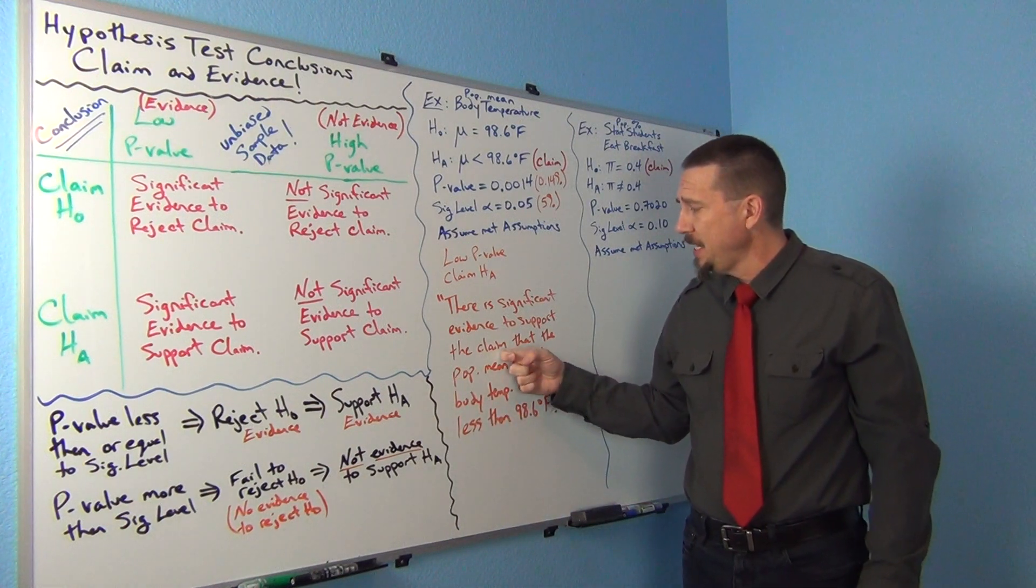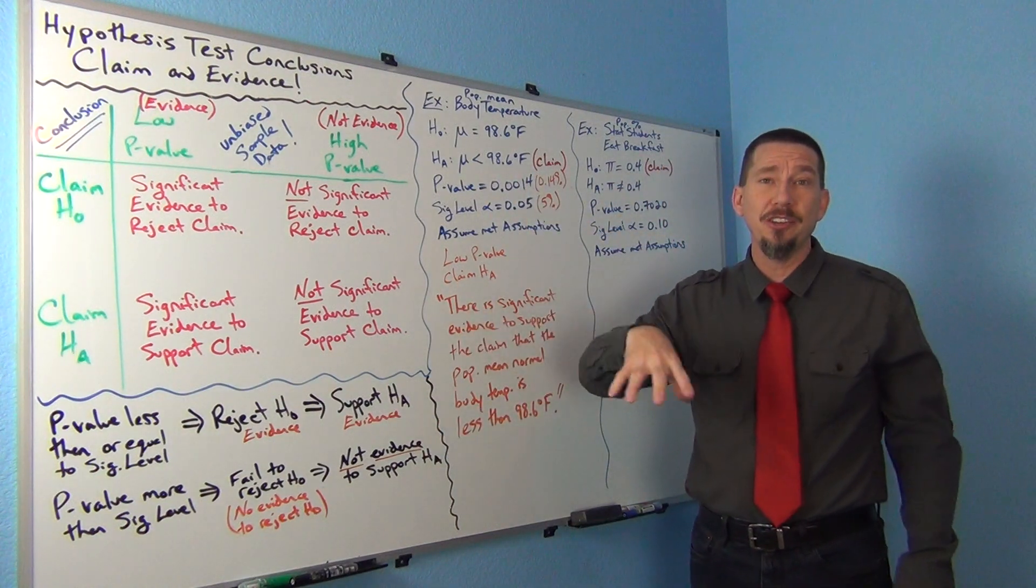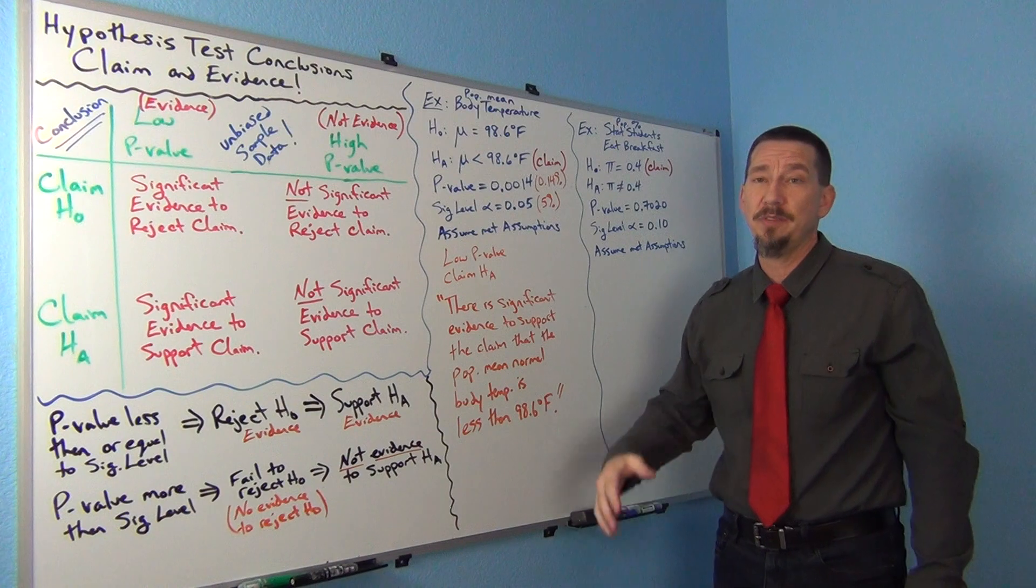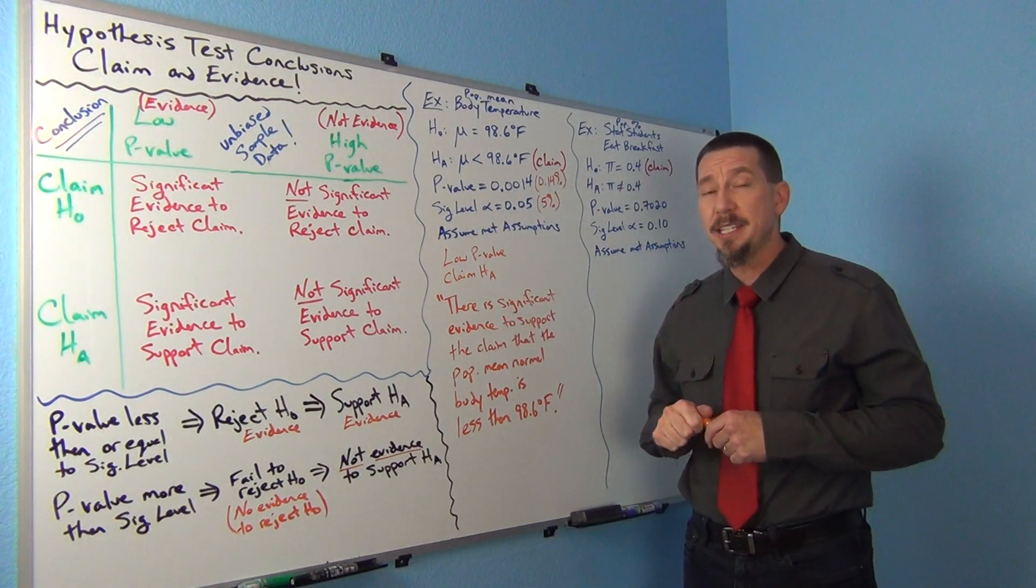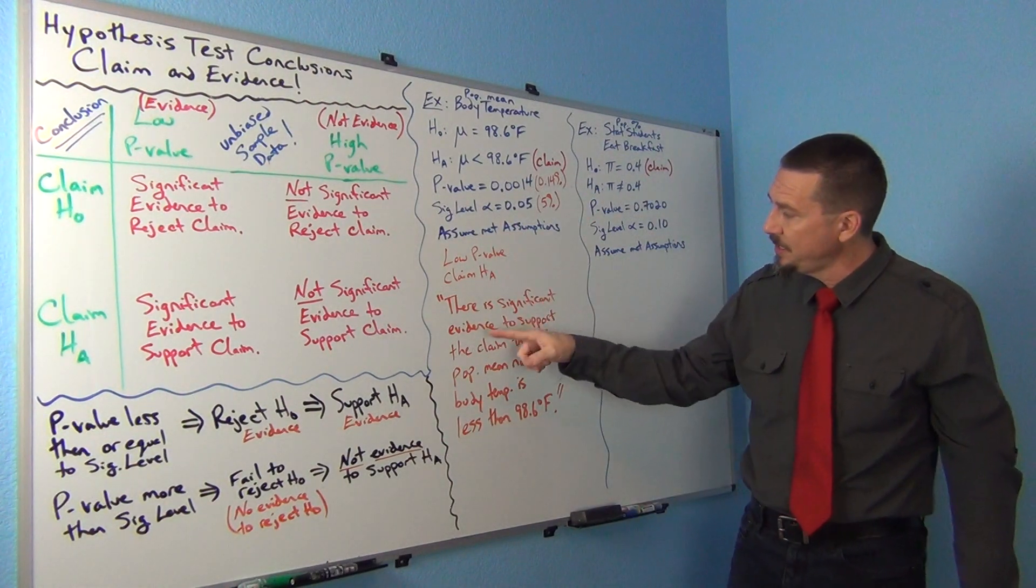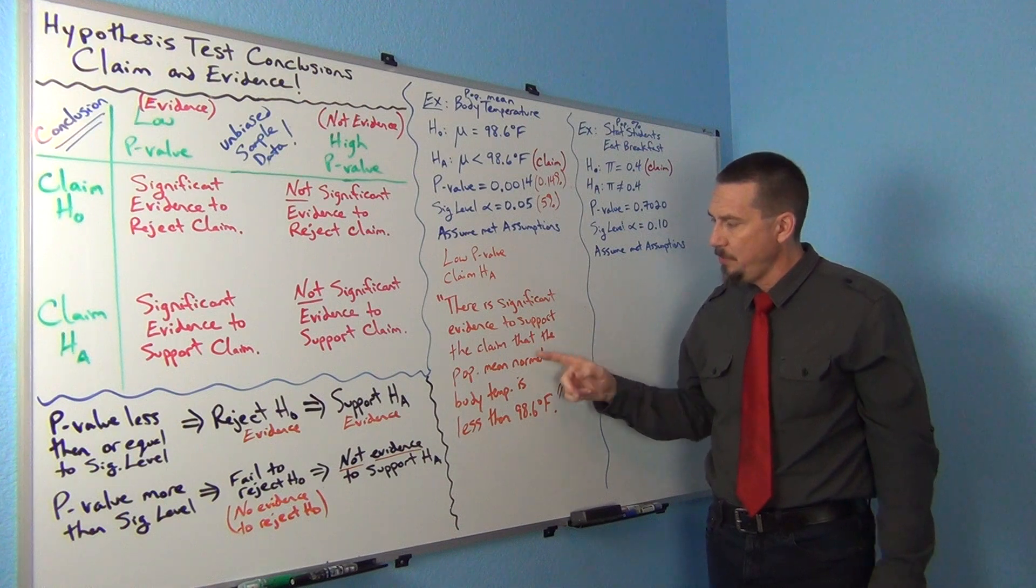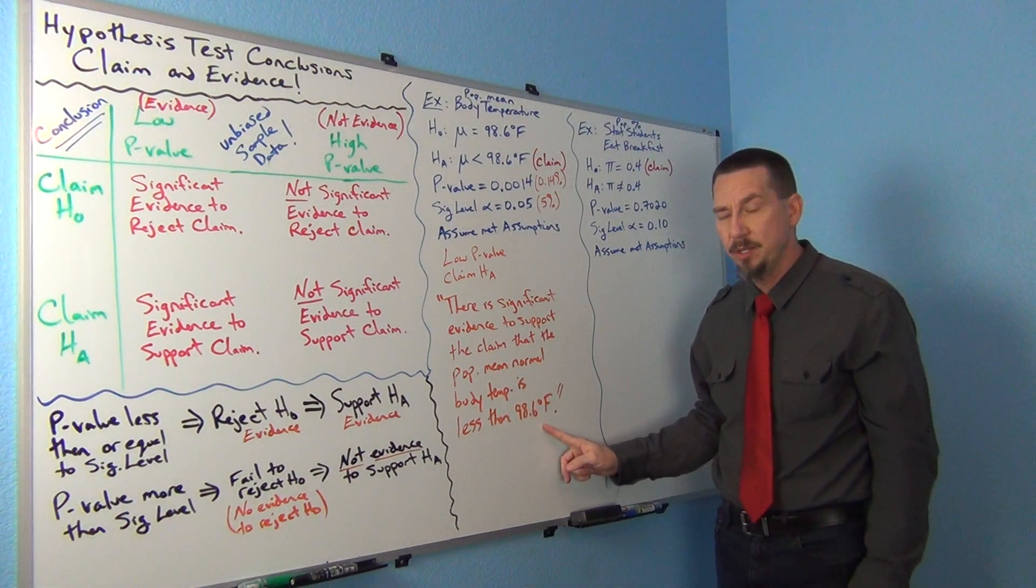So, again, it's always good to write, I always like to speak the words back to the person. So whatever they said in the article, that's what I like to speak that back. So if the scientist said we think that population mean average normal body temperature is less than 98.6, I'll say those words back to them. So there is significant evidence to support the claim that population mean normal body temperature is less than 98.6 degrees Fahrenheit.